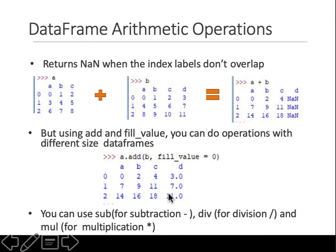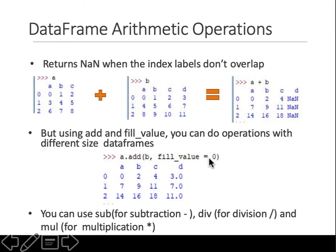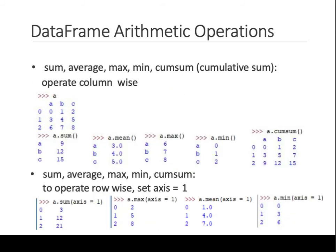Note that for existing columns the data types remain integers, but the new column added with fill_value is added as floats. You can also use .sub() to subtract, .div() to divide, .mul() to multiply — all those functions are available. You can either use them directly or provide a fill_value to replace missing values with a default like zero or five.